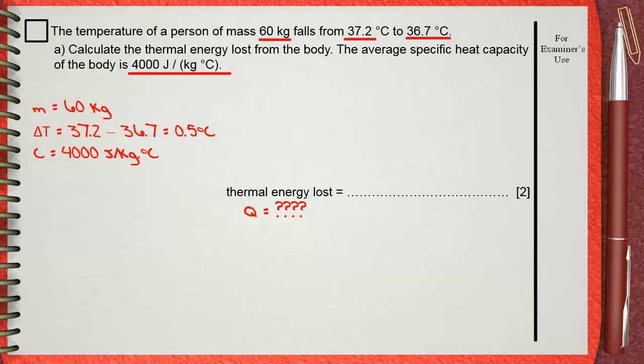Specific heat capacity. Since C equals Q divided by M delta T, and we need Q, the quantity of thermal energy lost by the body to cool down, this equals MC delta T, which is 60 times 4000 times 0.5. This will give the thermal energy lost 1.2 times 10 power 5 joules.